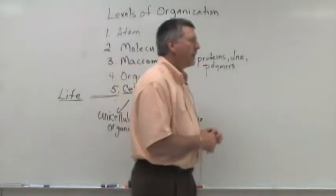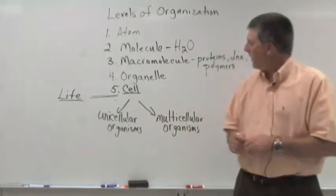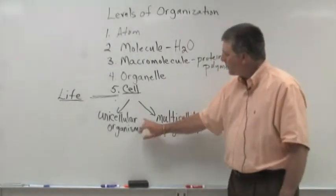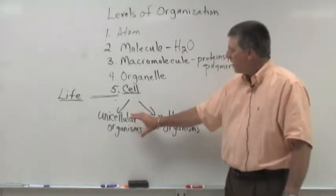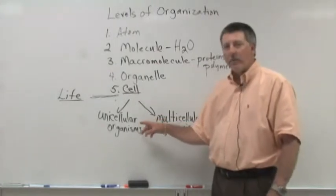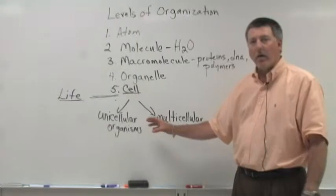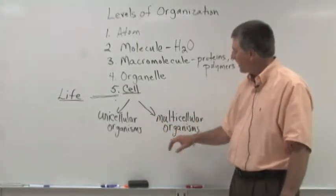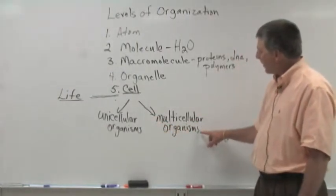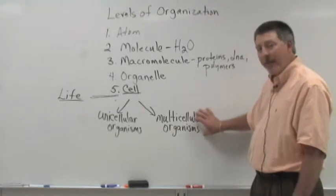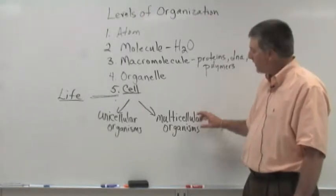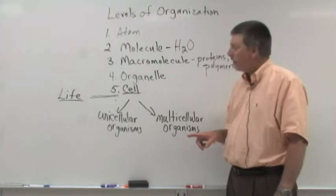We have to have two different levels of life here because a unicellular organism is one that is its own unique individual all by itself, just one cell like an amoeba or a paramecium or a bacterial cell. Multicellular organisms on the other hand have to have additional levels of organization because they're composed of more than one cell.